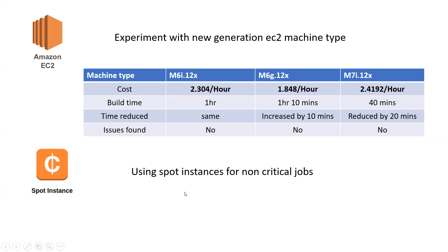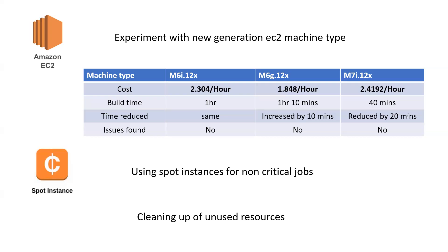In our case, we had some non-critical daily jobs, and we configured those builds to run on spot instances, which reduced our infrastructure cost. The next activity is a very underrated task: cleaning up unused resources. This is also a regular activity. Every 15 days we used to have a checkpoint where we checked all resources — EC2, S3, EBS — for any unused volumes and reviewed all our infrastructure. If a resource was not being used, we would take action on it. This is underrated but definitely saves cost, because with so many tools, machines sometimes get created and forgotten.